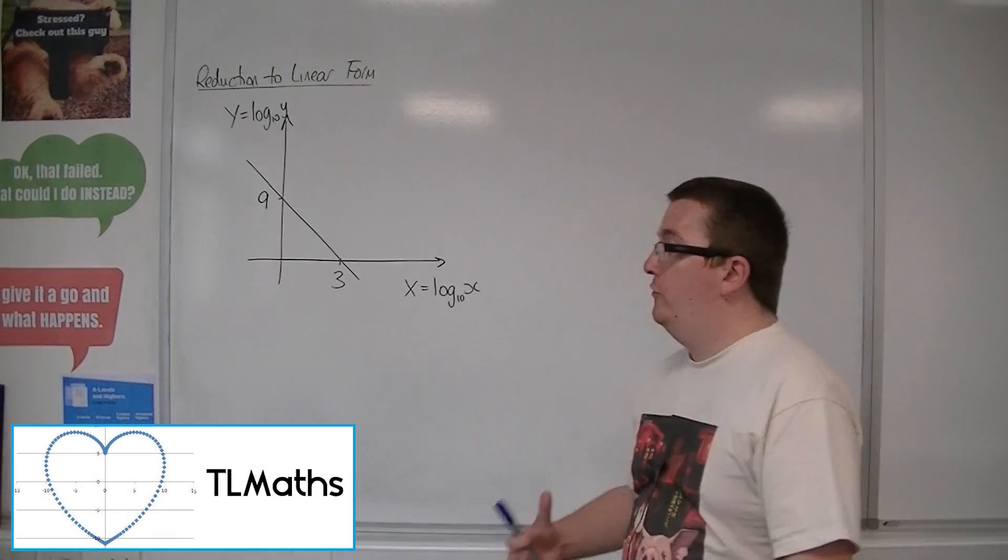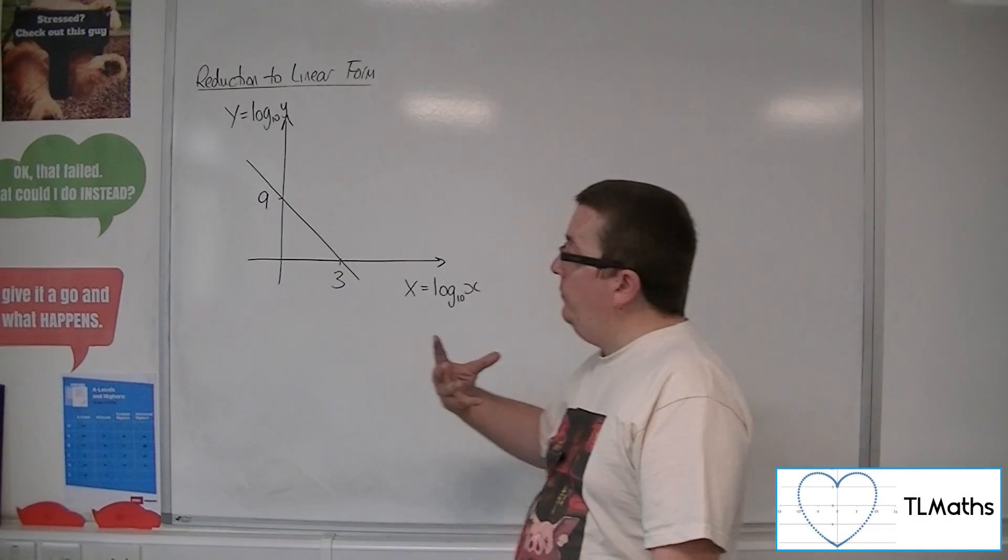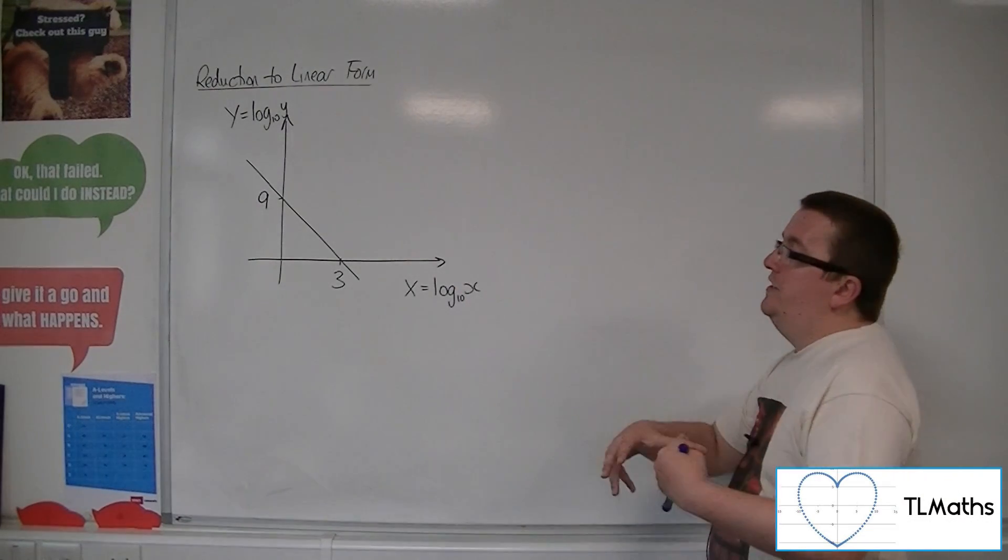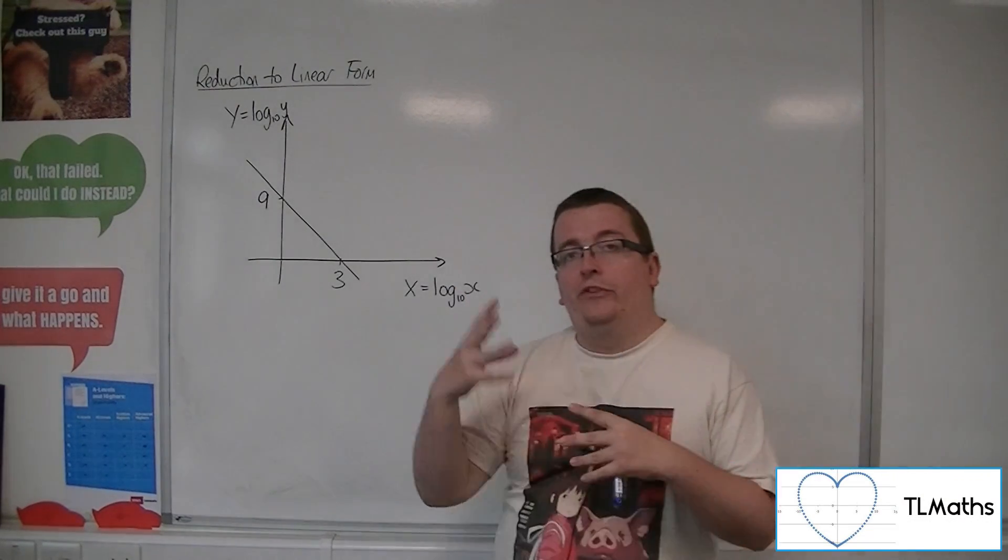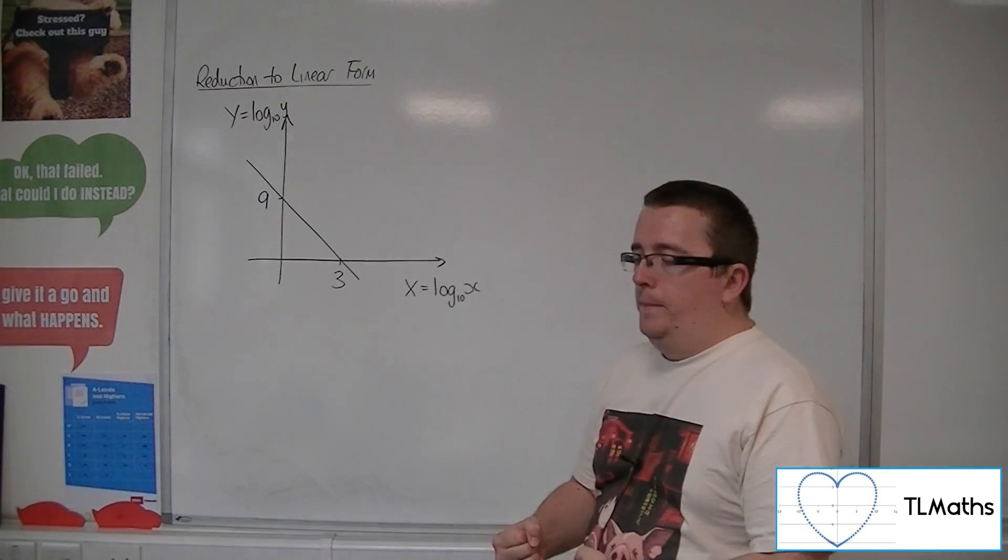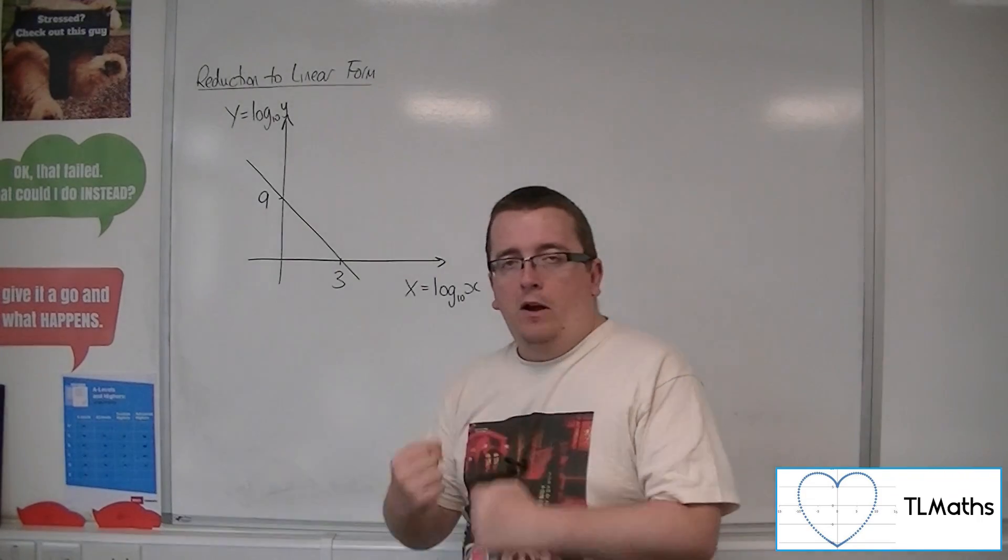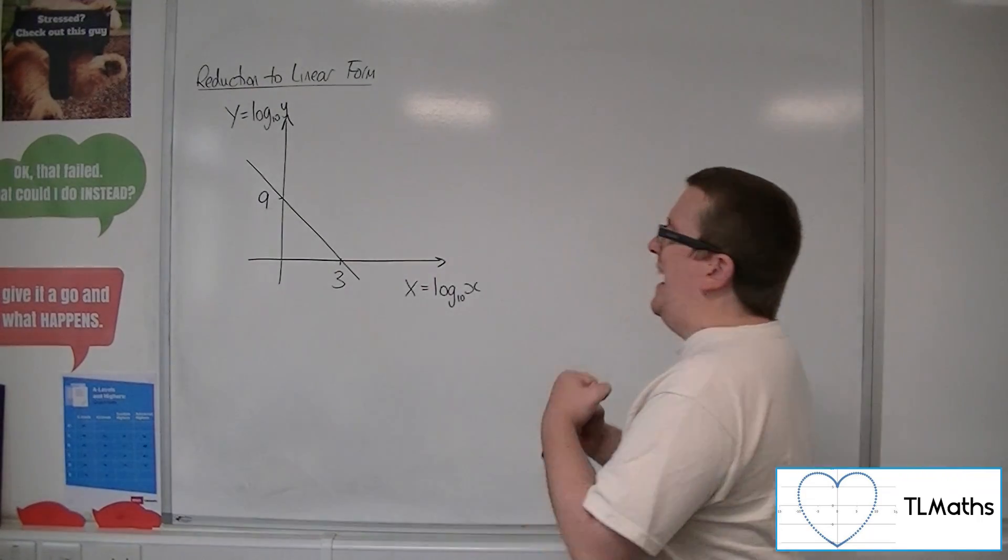So let's say you've gone through the process of reducing to linear form, and what you've then done is you've plotted the new points, log 10x against log 10y, and then you've drawn a line of best fit that passes through that information as best it can.